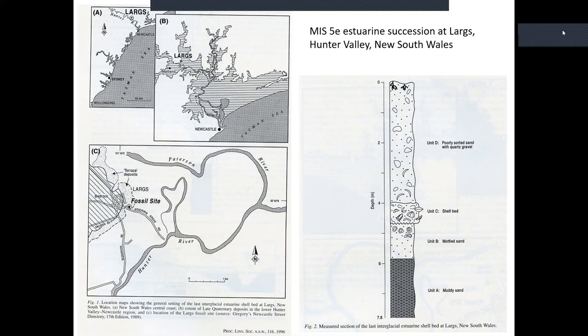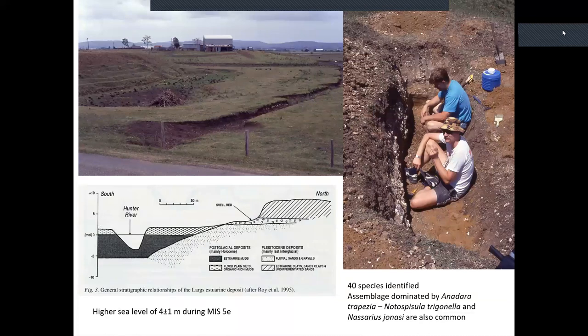One of the interesting questions is: where is the last interglacial along the New South Wales coastline? It's a question that impinges on the nature of the stratigraphical record. One location that has been identified is at Largs near Maitland — a stratigraphic section about 32 kilometers inland from the northern coastline — a last interglacial succession. When I was working at Newcastle University a student worked on this site: 40 species of mollusks identified, with Anadara trapezia as the dominant mollusk, indicating a sea level of about four meters above present.